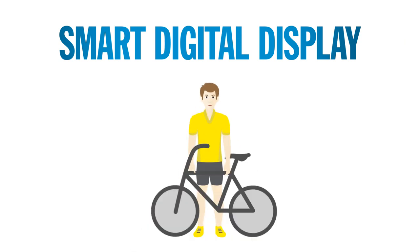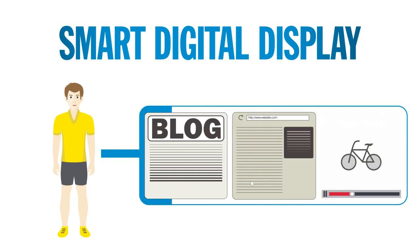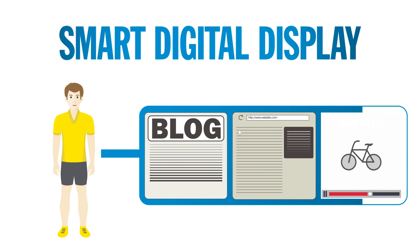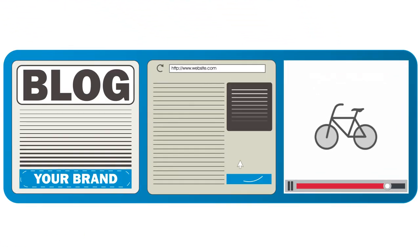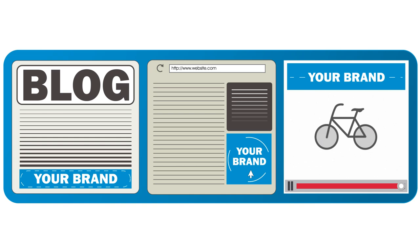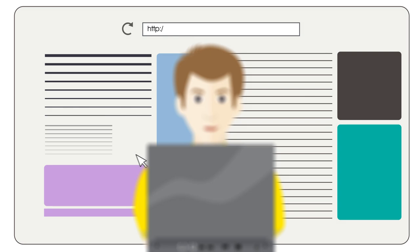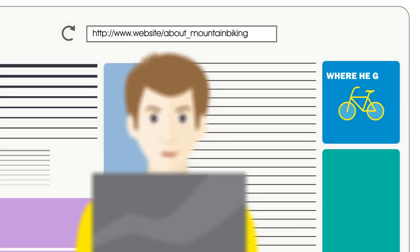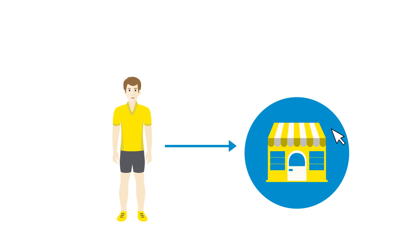Take Paul, a mountain biking enthusiast, as an example. He spends a lot of his free time reading blogs, surfing company websites, and watching online videos related to mountain biking. If you own a bike shop, you definitely want to get your brand in front of Paul as often as possible. Smart Digital Display will analyze Paul's online behavior and strategically display your ad on the web pages he visits. By doing so, he'll think of you when he needs a new bike or some accessories.